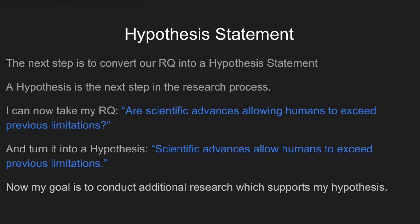Once we have that research question — and this takes several steps — first you come up with your research question, then you do some research to see whether it's viable, and then you get to your hypothesis statement. We convert that research question into a hypothesis statement, which is the next step in the research process. We haven't even gotten to our thesis yet. If I take my research question — are scientific advances allowing humans to exceed previous limitations? — I can turn that into a hypothesis based on three, four, or five sources I've investigated.